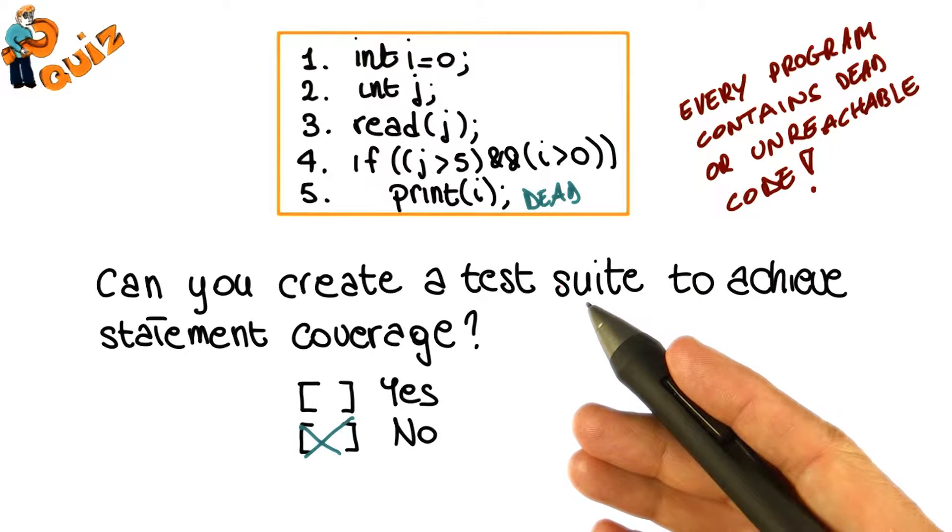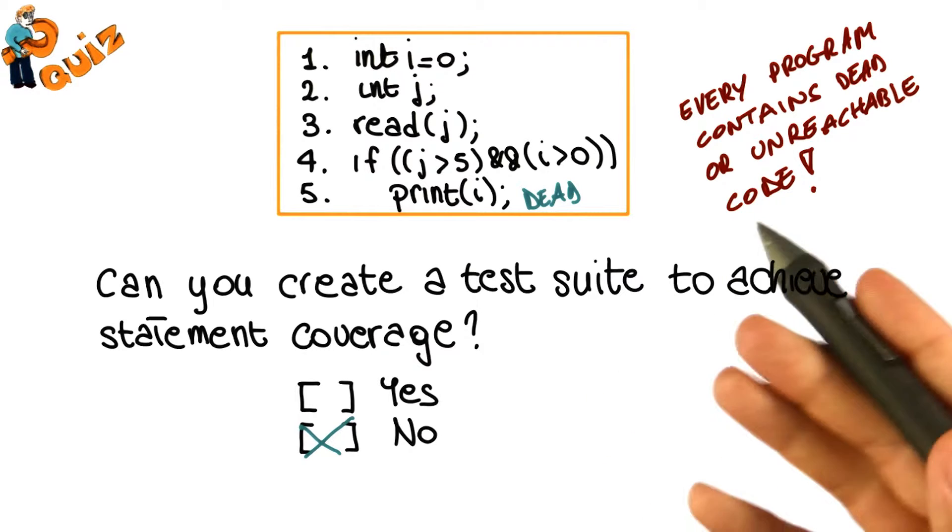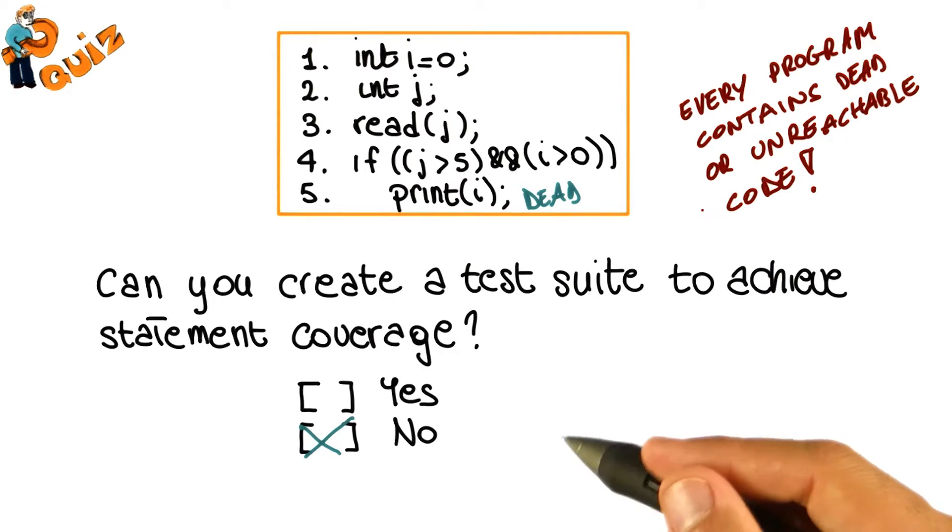Why is that? Various reasons. For example, defensive programming. Or for example, developing for future releases. So there might be pieces of code that are added, but they're still not activated. They're still not invoked by any other part of the code.